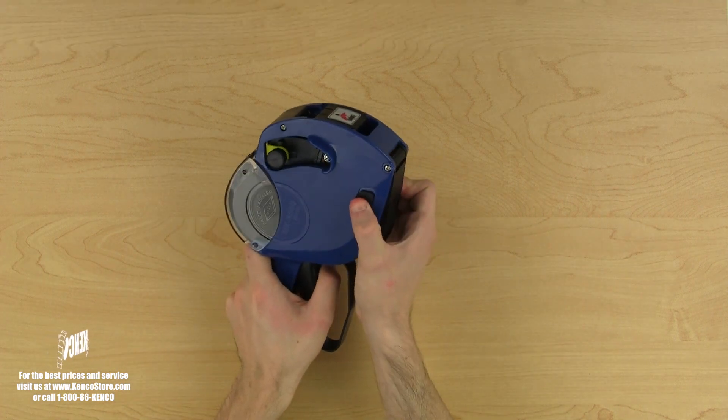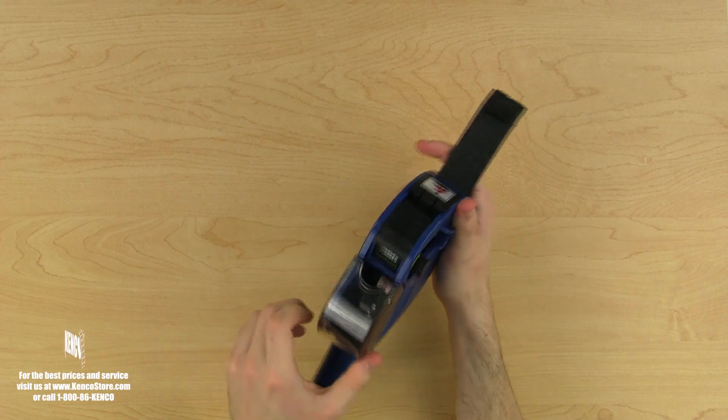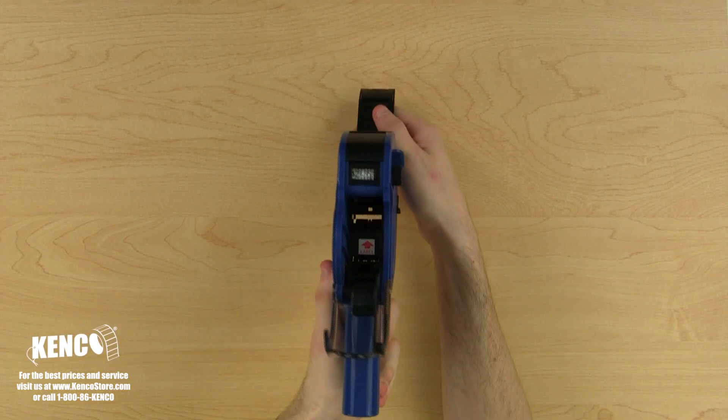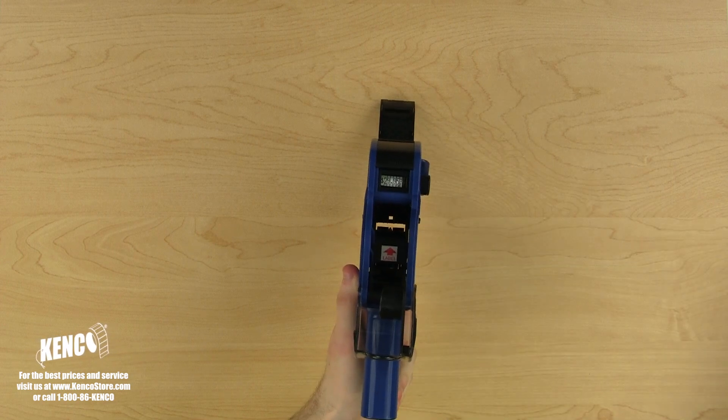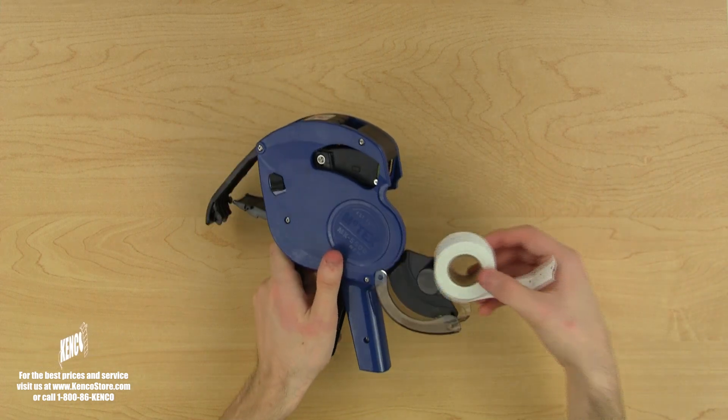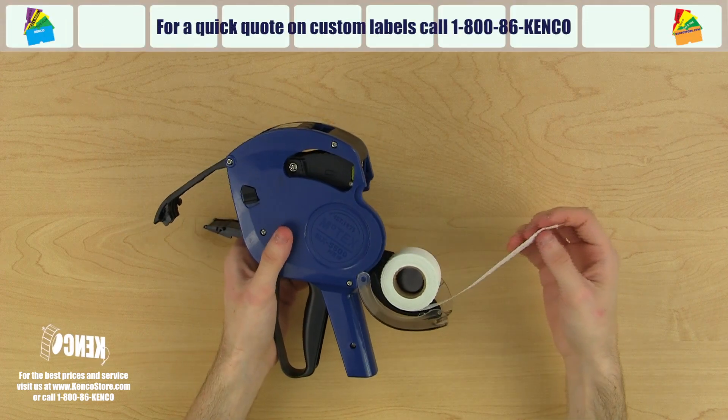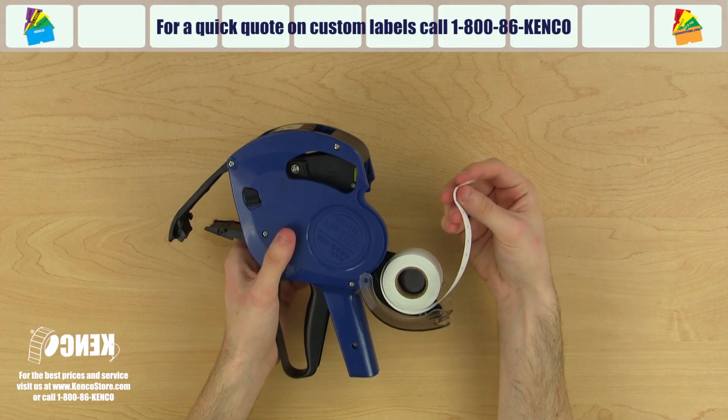First, open up the bottom cover by pulling the cover latches towards the trigger. Next, we'll open the upper housing assembly. Grab a roll of labels and place it on the shaft of the housing assembly in a counterclockwise direction. These blank labels in assorted colors can be custom printed with your information and are available through Kenco.